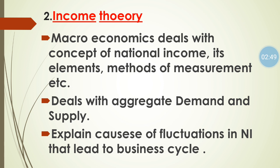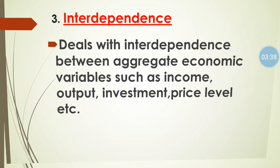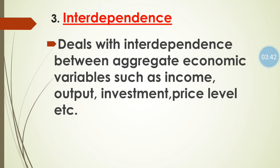Macroeconomics also deals with aggregate total demand and total supply. With the help of macroeconomics, we also understand what are the causes of fluctuation — meaning the ups and downs — in national income, and that leads to the business cycle. Business cycle means whenever there are ups and downs in business activity. We understand the reasons for fluctuation in national income and the reasons for business cycles, along with its phases like prosperity, recession, depression, and recovery.